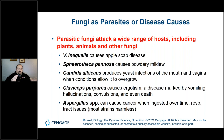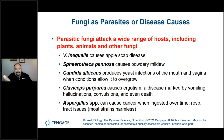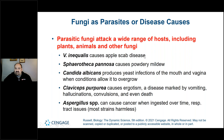Parasitic fungi attack a wide range of hosts including plants, animals, and other fungi. Venturia inaequalis causes apple scab disease, and Sphaerotheca pannosa causes powdery mildew. Candida albicans produces infections of the mouth and vagina — warm, moist areas. When conditions allow it to overgrow, it can become problematic.